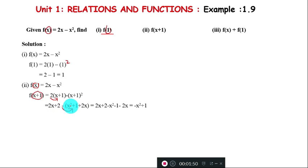So we have 2x + 2 - x² - 1 - 2x. The 2x and -2x cancel, leaving -x² + 2 - 1, which equals -x² + 1. So f(x+1) = -x² + 1.